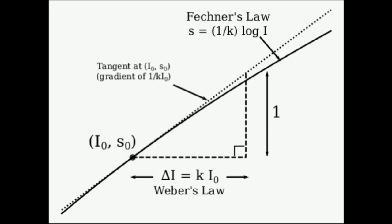Fechner was a student of Weber and named his first law in honor of his mentor, since it was Weber who had conducted the experiments needed to formulate the law.